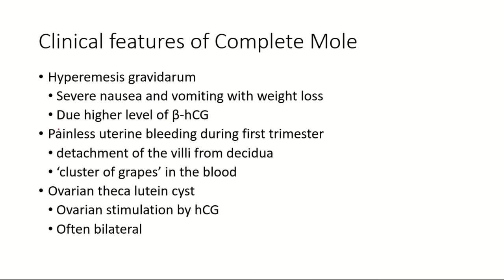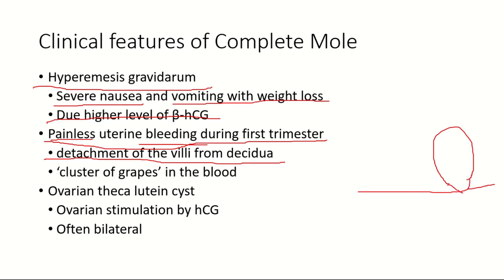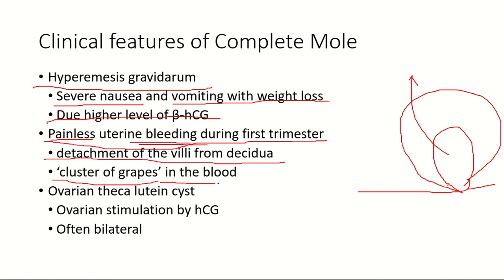The patient may also present with painless uterine bleeding during the first trimester or early second trimester. The bleeding occurs due to detachment of the villi from the decidua. As the villi become massively swollen they detach from the decidua, causing uterine bleeding via the vagina. The patient may also report finding cluster-of-grapes-like tissue in the vaginal blood.